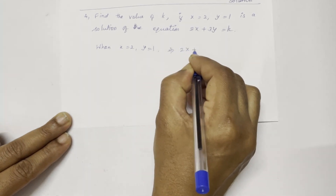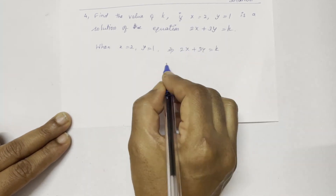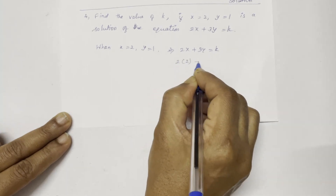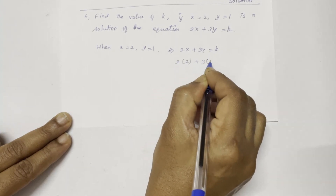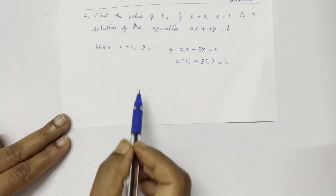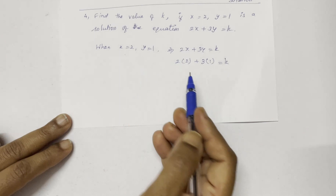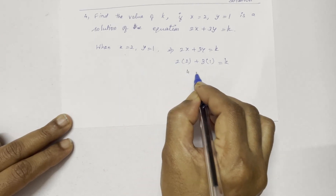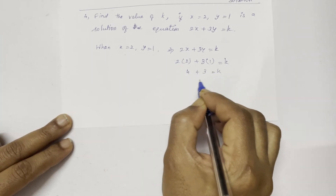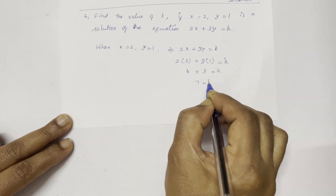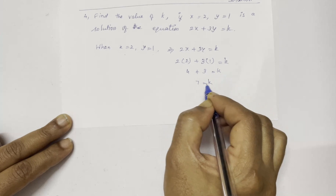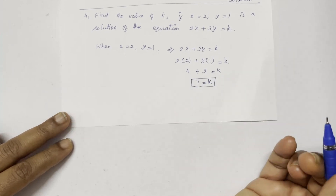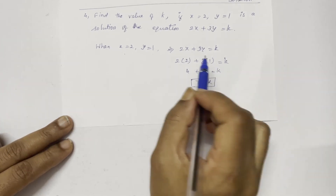Substituting into 2x plus 3y equals k: 2 times 2 plus 3 times 1 equals k. So 4 plus 3 equals k, therefore k equals 7.